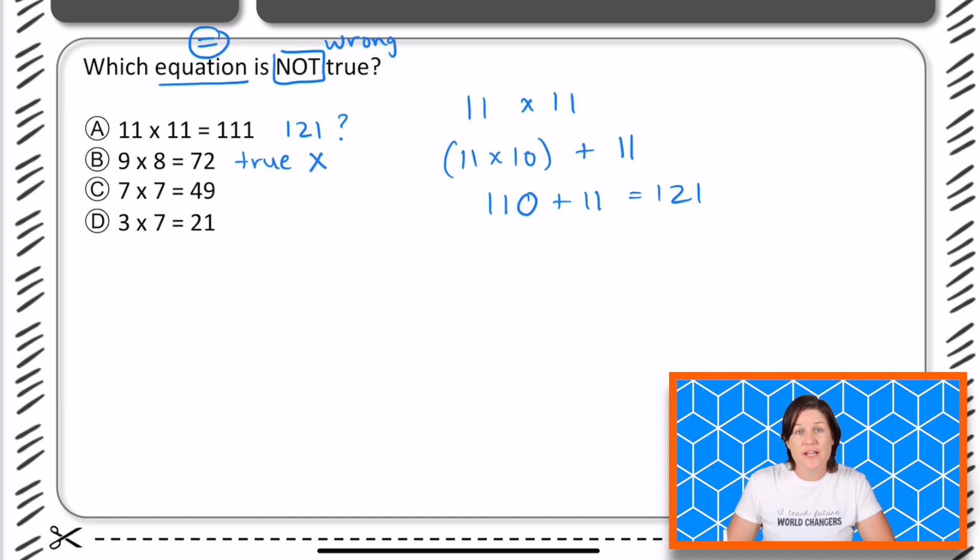Now C, seven times seven. Is that 49? It sure is. This is true. So we can eliminate that one.